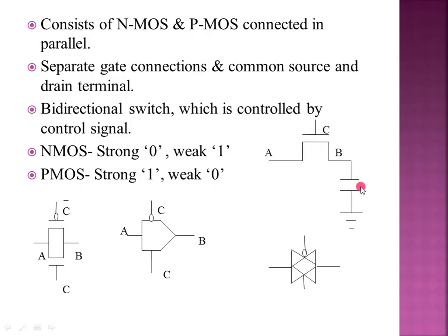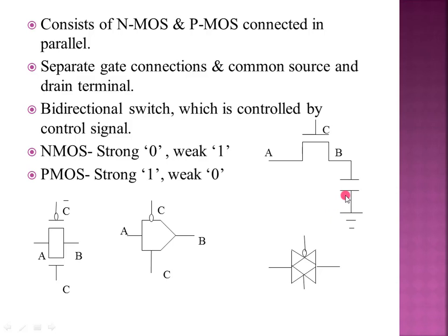For NMOS, if the output is connected to the pass transistor and the control signal is high, passing a 0 gives exactly 0 — strong 0. But passing a 1, the capacitor charges only to Vdd minus Vtn. So NMOS is strong 0 but weak 1. PMOS is strong 1 but weak 0, because in 0, the capacitor only partially discharges by the Vtp threshold voltage.